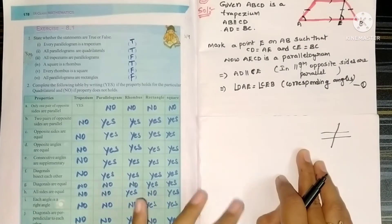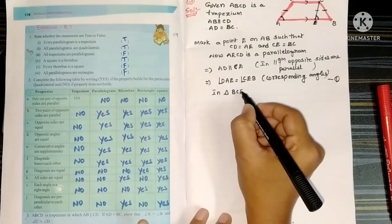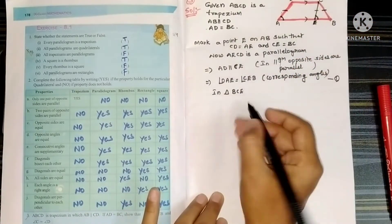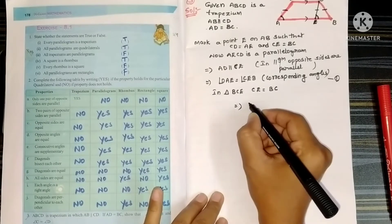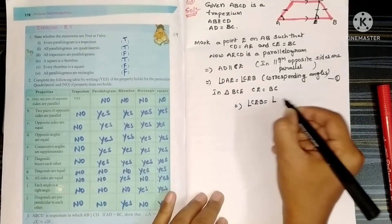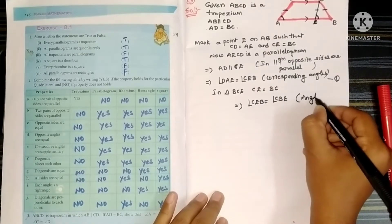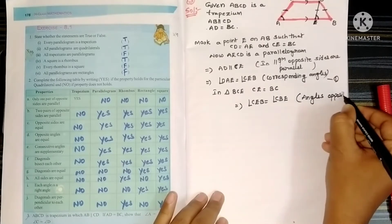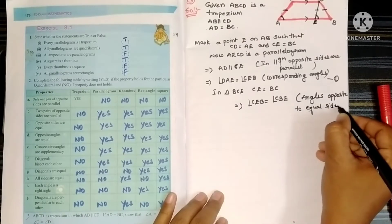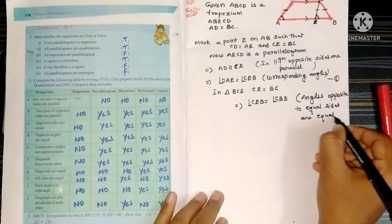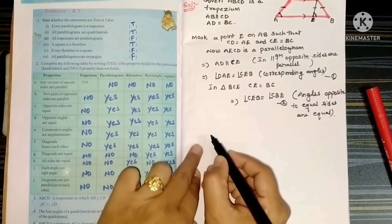Now observe triangle BCE. In triangle BCE, two sides are equal: CE equals BC. Therefore, we can say angle CEB equals angle CBE, because angles opposite to equal sides are equal. Let this be step two.